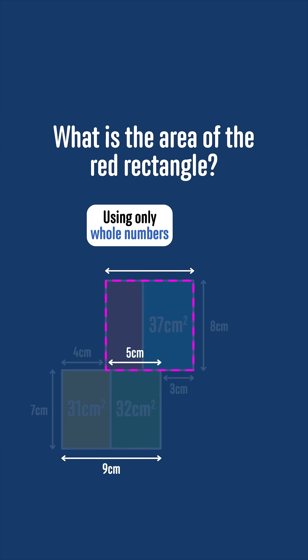Then the side length of the rectangle formed by combining the red and blue rectangles is 5 plus 3, or 8cm. So that rectangle is actually a square of side length 8, and so its area is 8 times 8, or 64cm squared.